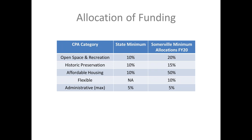For instance, in one year we may have a lot of applications in the open space category and a few in the historic category. This gives the community preservation committee the flexibility to respond to changes in demand. Up to 5% can go to administration of the program, and these funds are utilized for expenses around public meetings, staff salary, and consultancies. The state requires that we have at least a 10% minimum in each of these categories.